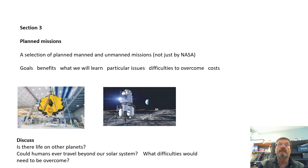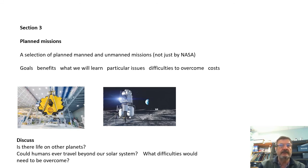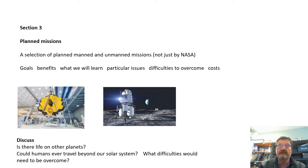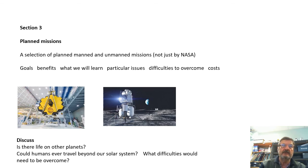Section 3 covers what's in the pipeline: a selection of planned manned and unmanned missions — and not just by NASA, as other countries and private companies are now getting involved. What are the goals of these missions? What benefits could there be? What will we learn about the universe? What difficulties would need to be overcome, and what would the costs be? The pictures shown include the James Webb Telescope — which at the time of making this video wasn't up there yet — and the Artemis mission, which is something in the pipeline for going to the Moon again.